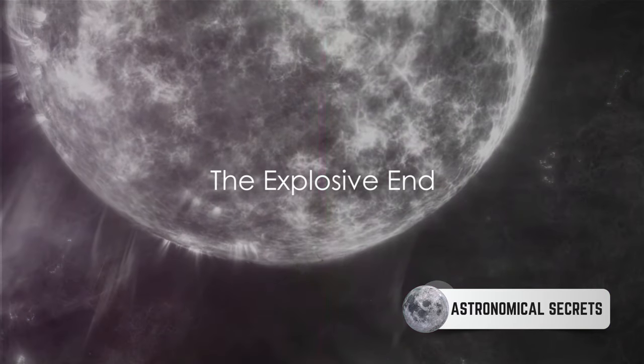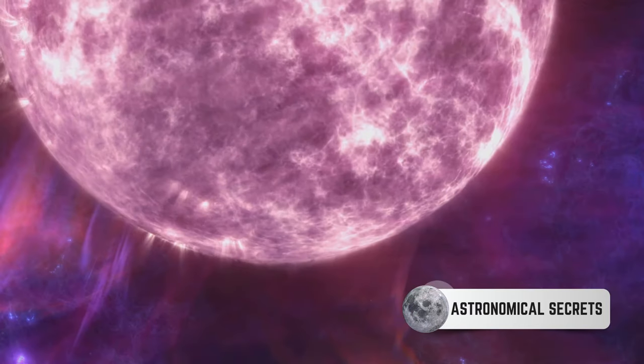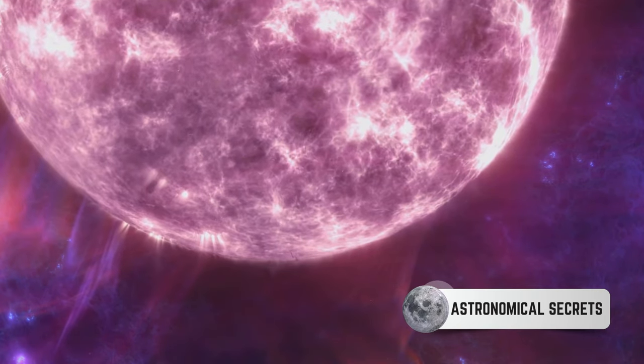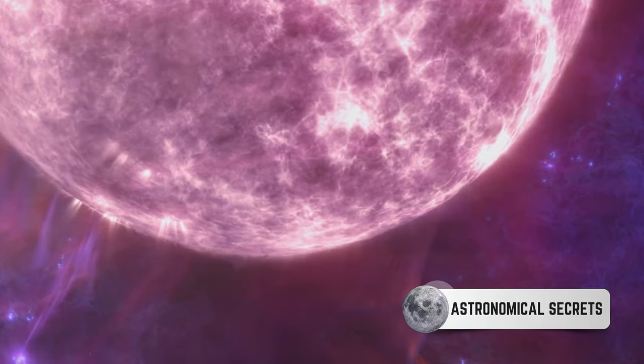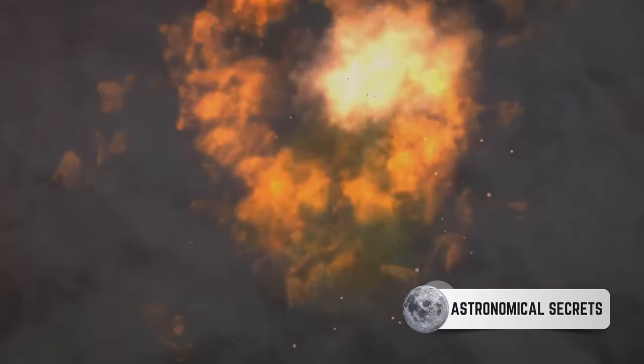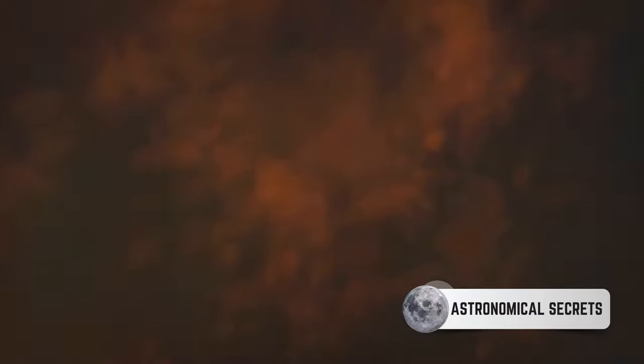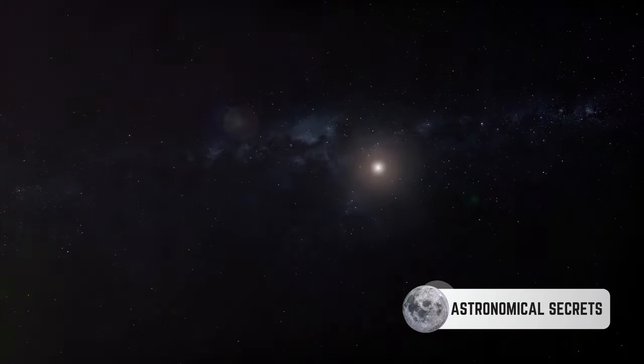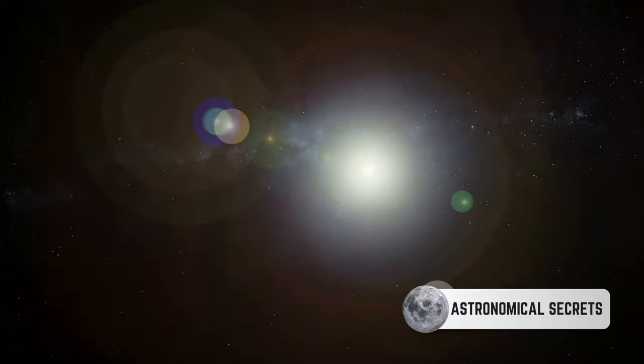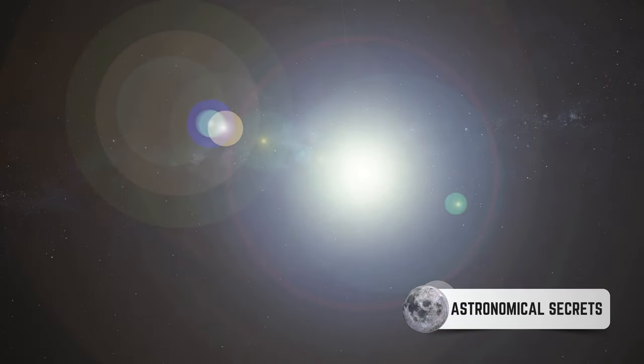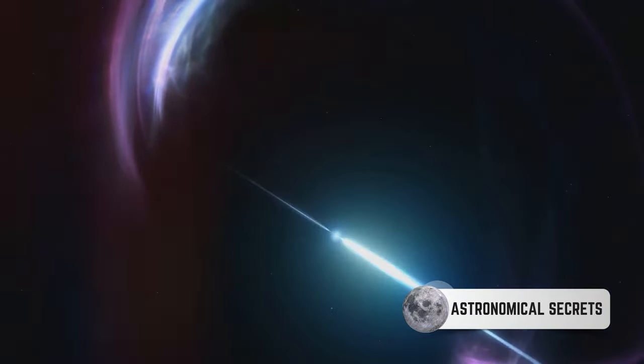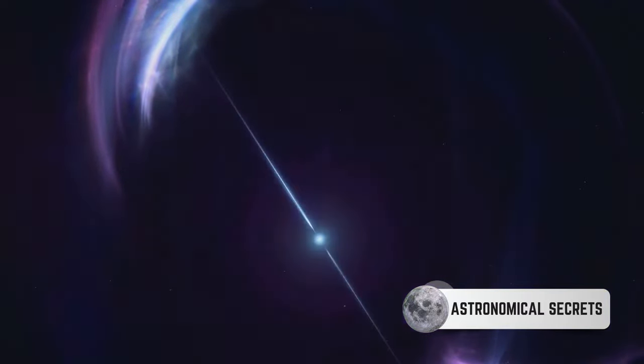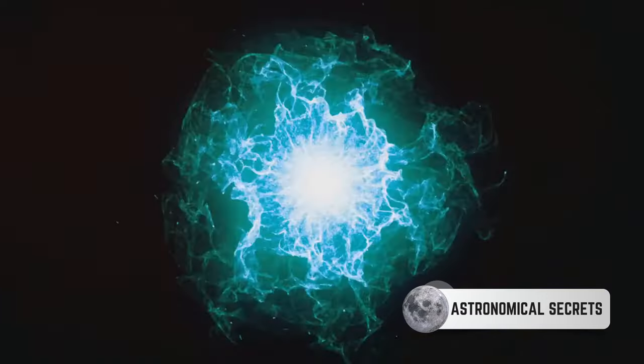What happens when a Wolf-Rayet star reaches the end of its life? This is the question that brings us to the grand finale of our stellar story. Wolf-Rayet stars, these cosmic giants, do not go gently into that good night. Instead, they meet their demise with an explosion of epic proportions, a supernova. This is not just any ordinary explosion, mind you. A supernova can outshine an entire galaxy, releasing energy equivalent to what our sun will emit over its entire lifespan. But the grandeur of the supernova is not the only spectacle to behold. The death throes of a Wolf-Rayet star also give birth to one of the universe's most enigmatic phenomena, gamma-ray bursts.